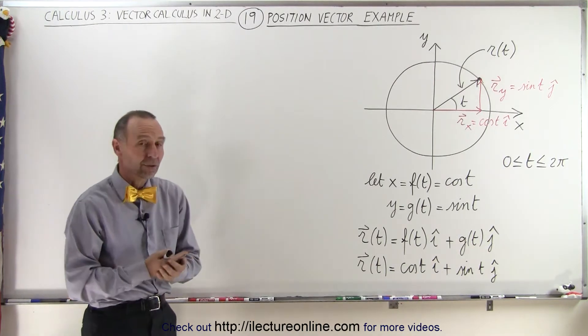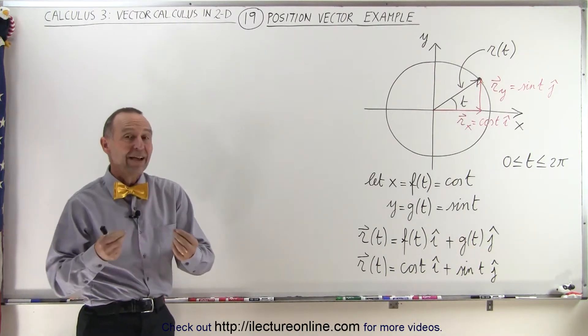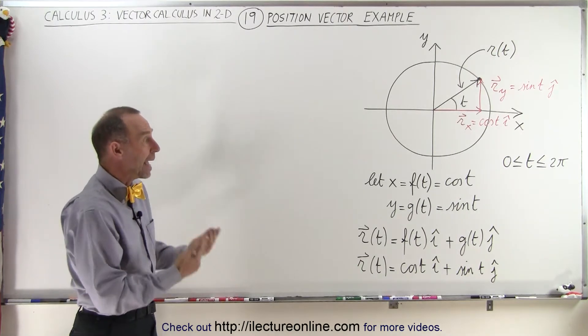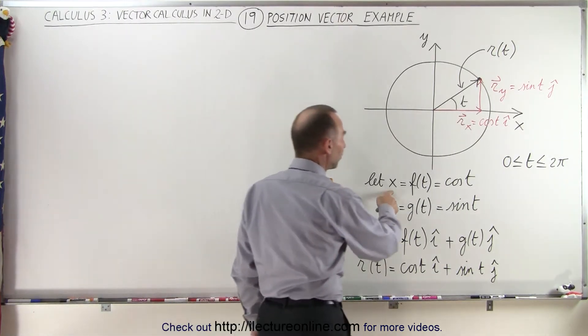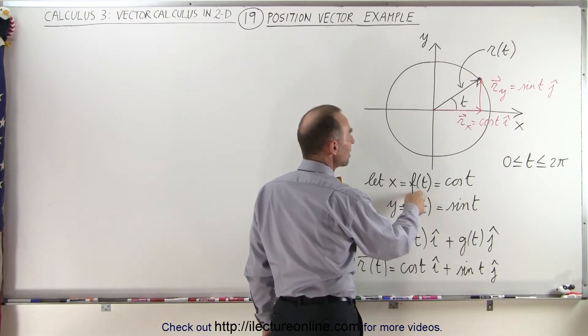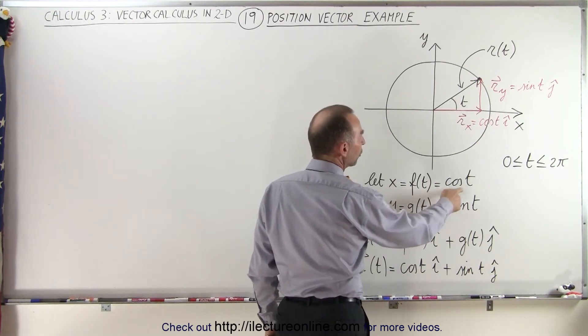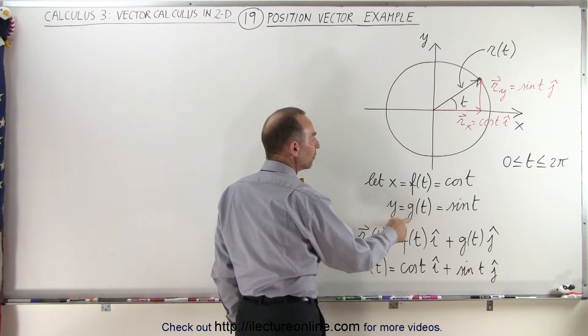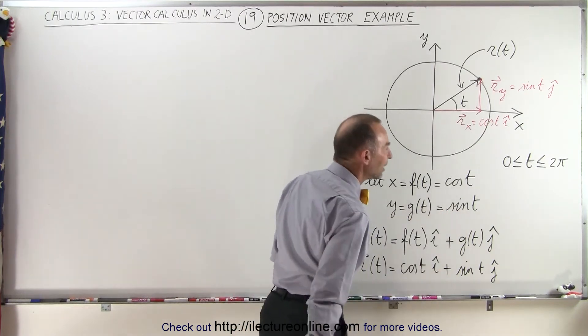And you can see that the parametric variable in this case doesn't have to be time, it can simply be an angle. So here we have x being a function of t, and the function is going to be the cosine of t, and y is going to be another function of t, in this case the sine of t.